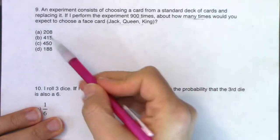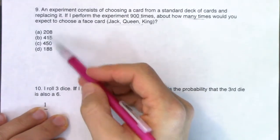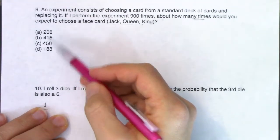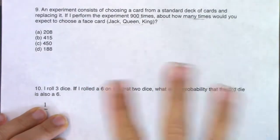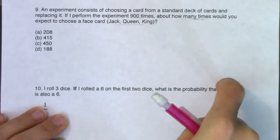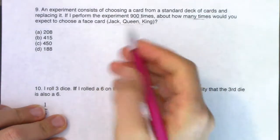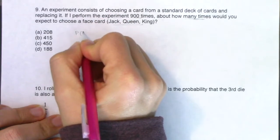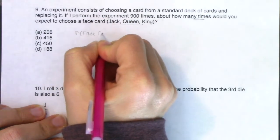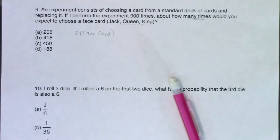So it says I'm going to perform this experiment 900 times, and I want to talk about how many times you would expect to choose a face card. Now this how many times question, take a look at that. Those answers there, these are not probabilities. These are not relative frequencies. These are frequencies. So we're going to deal with probabilities while we crunch some numbers, and then we have to convert it back to frequencies, which is fine. We can do this.